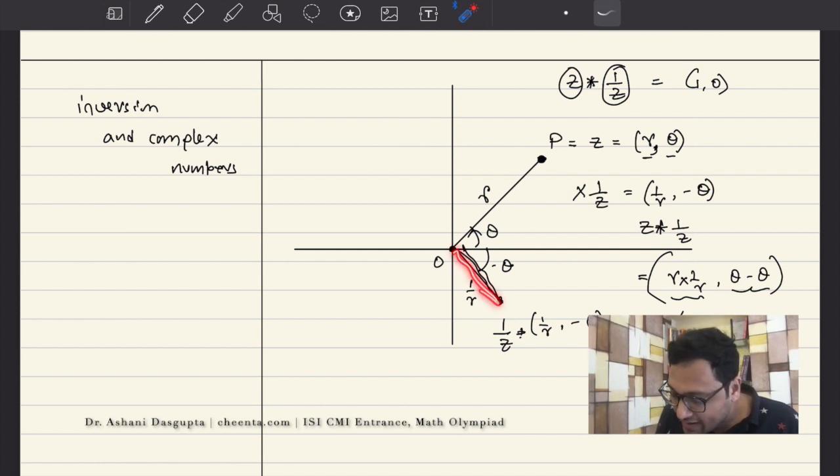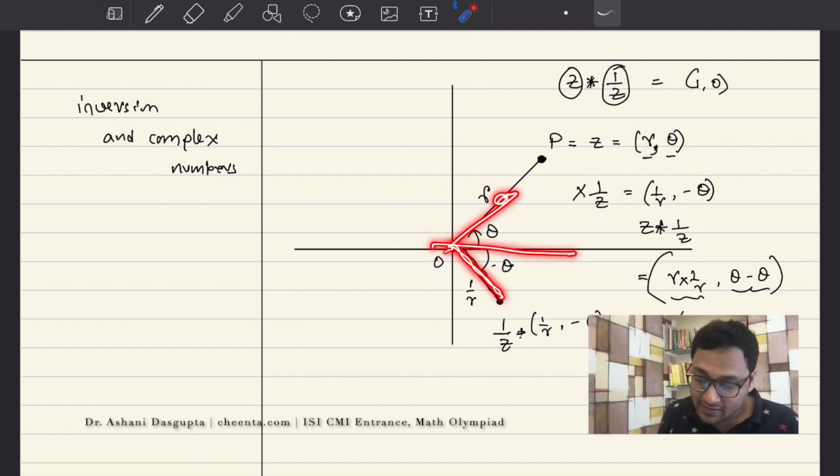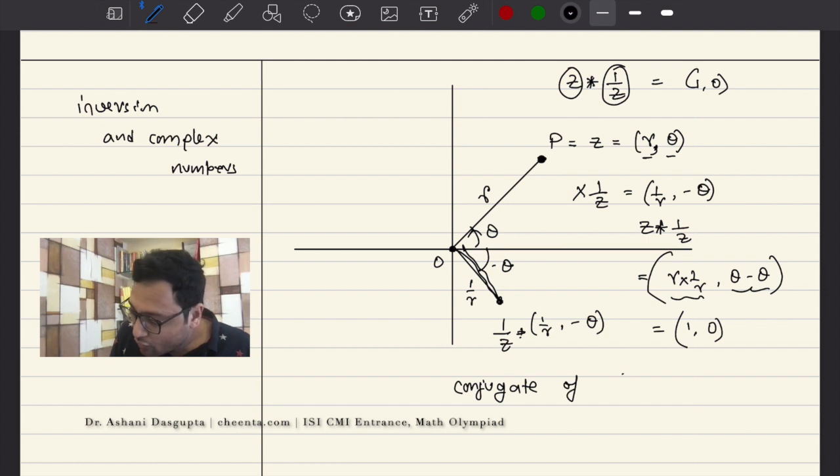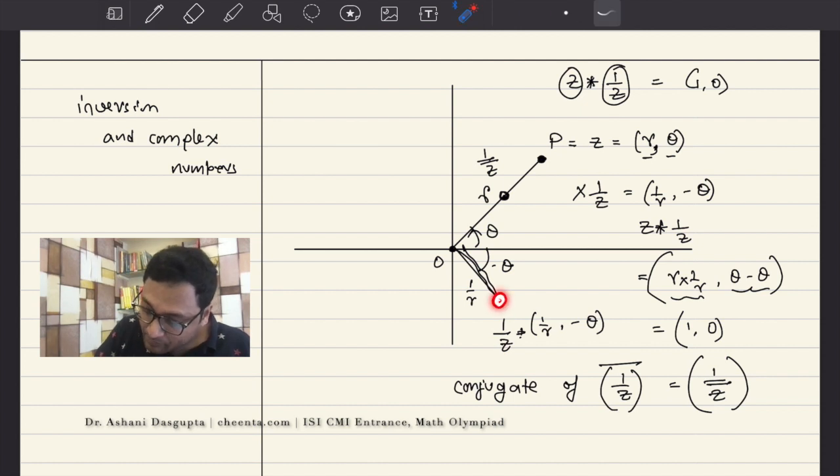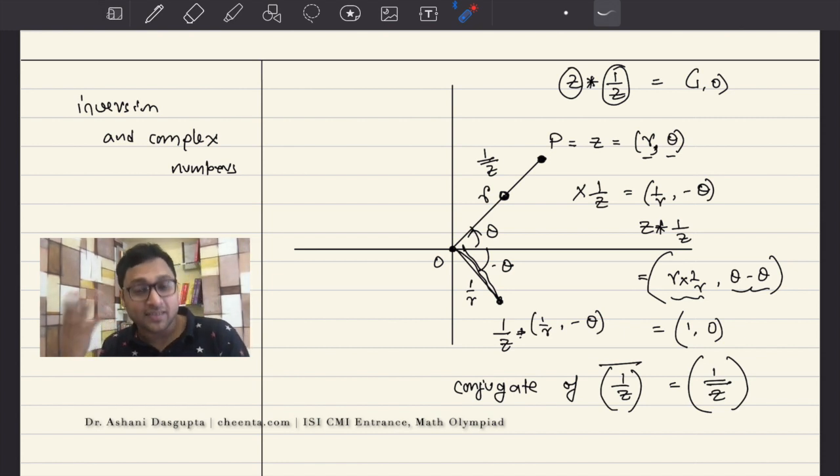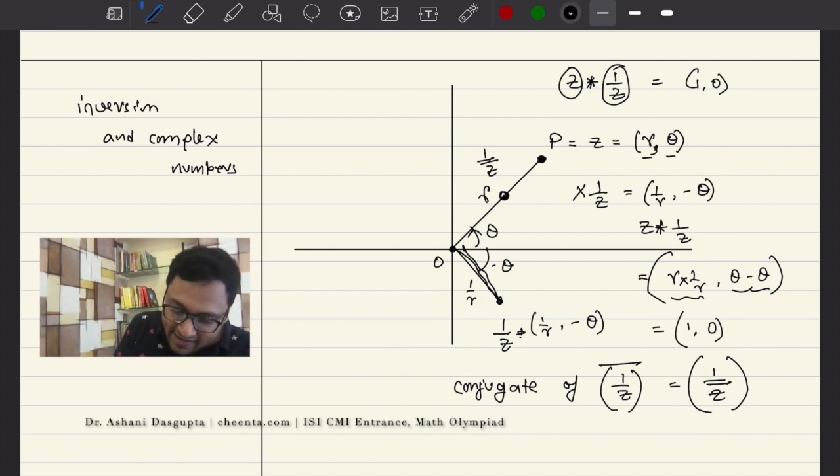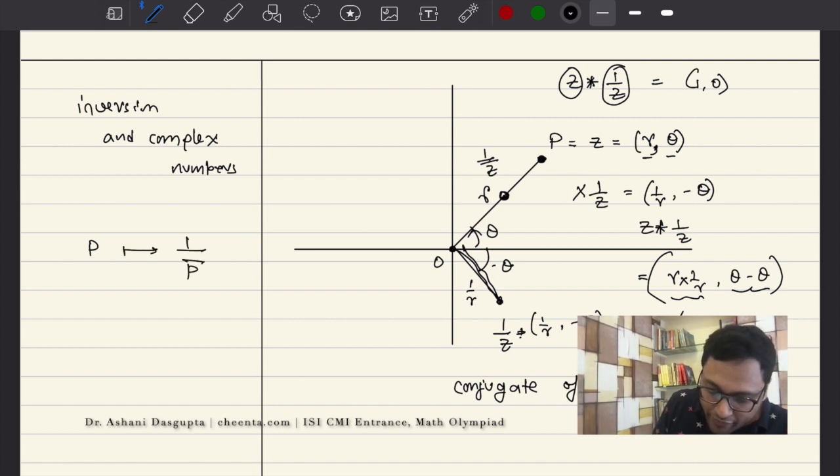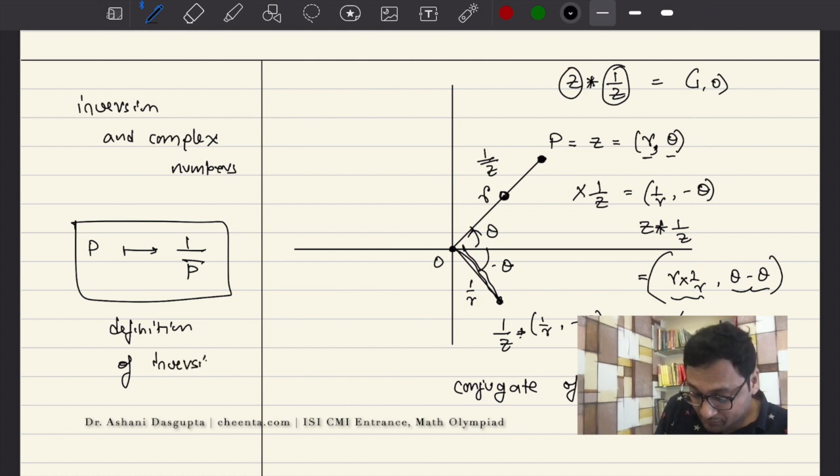So, what you have to do is, you have to reflect 1 over Z, this much, about x-axis. And it would come here. You reflect it. So, what you do is, you take the conjugate of 1 over Z. Conjugate means you take the reflected image of it. So, this is 1 over Z bar. So, you are now here, which is 1 over Z bar. Point Z, 1 over Z comes here. And that is precisely the inverse image. Inversive geometry's inverse, the inverse image of the point P. So, the point Z or P goes to 1 over P bar. This is the definition, the complex number definition of inversion. This is how inversion can be computed.